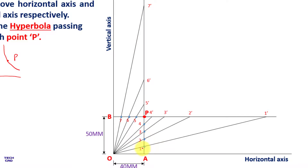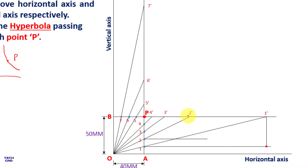From point one, extend a line horizontally, and from one dash extend downward — wherever these meet, we have an intersection point for the hyperbola. In the same way, from point two extend horizontally and from two dash extend vertically to get another hyperbola point. Then from three and three dash they meet at a suitable point, and from four and four dash they meet at another suitable point.